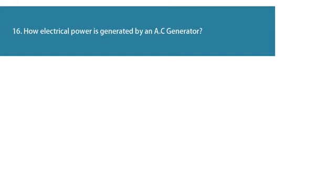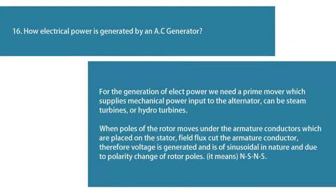Question 16: How is electrical power generated by an AC generator? For the generation of electrical power, we need a prime mover which supplies mechanical power input to the alternator — this can be steam turbines or hydro turbines. When the poles of the rotor move under the armature conductors placed on the stator, the field flux cuts the armature conductors; therefore voltage is generated. It is sinusoidal in nature due to the polarity change of rotor poles — N, S, N, S.